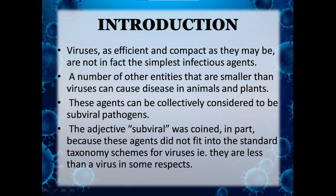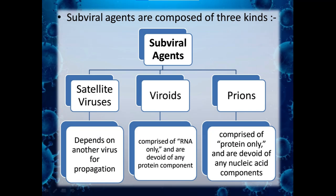Viruses, as efficient and compact as they are, are not in fact the simplest infectious agents present. A number of other entities that are smaller than viruses can cause disease in animals and plants. These agents can be collectively considered to be sub-viral pathogens. The adjective sub-viral was coined because these agents did not fit into the standard taxonomy schemes for viruses. Sub-viral agents are composed of three kinds: satellite viruses, viroids, and prions.